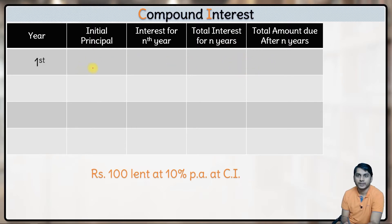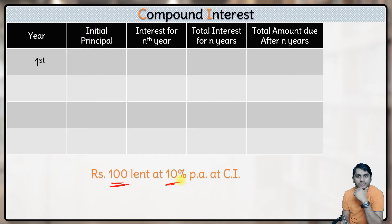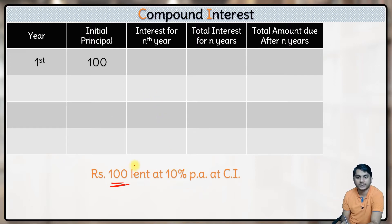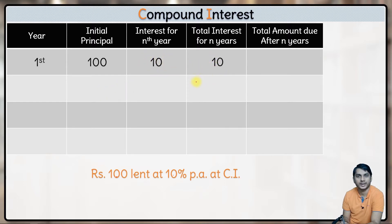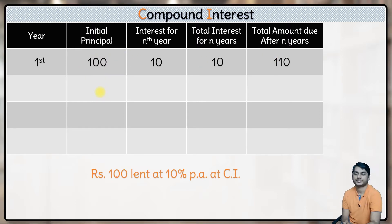If you talk about the first year, there is no difference in the first year between compound interest and simple interest. 100 rupees are lent at 10 percent per annum, so the initial principal will be 100 rupees. 10 percent of 100 rupees — so the first year's interest will be 10 rupees. Total interest is also 10 rupees. So the amount due will be 100 rupees plus 10 rupees interest, which is 110 rupees.